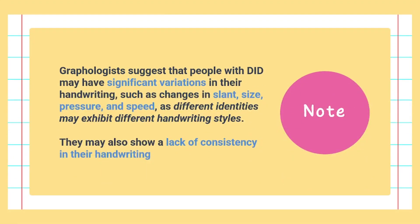Graphologists note that people with DID — Dissociative Identity Disorder — represent an extreme case of dual personality, a recognized mental health condition. In such cases, the handwriting slants may vary drastically, the letter size can shift from very large to very small, and the pressure can range from very light to very heavy. These different identities may exhibit different handwriting styles, resulting in a severe lack of consistency. If you observe this extreme inconsistency in handwriting, it may indicate DID and the person should seek a therapist or medication.